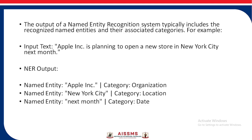The output of a named entity recognition system typically includes the recognized named entities and their associated categories. For example, input is: 'Apple Inc. is planning to open a new store in New York City next month.' The NER output is: named entity Apple Inc. with category Organization, New York City with category Location, and next month with category Date.